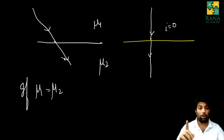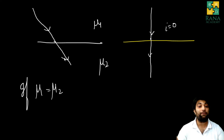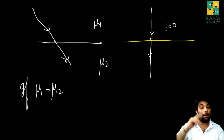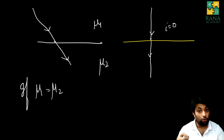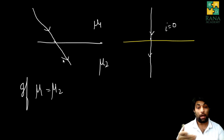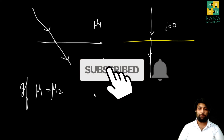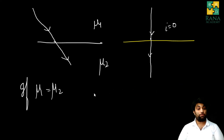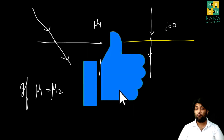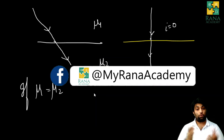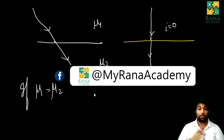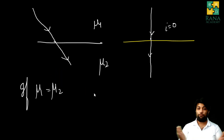Let us revise: number 1 — when a ray of light falls normally on the surface, it will travel from one medium to another without any deviation. Number 2 — when a ray of light travels from one medium to another and both have the same refractive index, the ray of light will also travel without any deviation. In today's lecture we discussed the principle of reversibility as well as the conditions under which a ray of light can travel from one medium to another without any deviation. Download the notes from the link in the description box. Thank you so much.